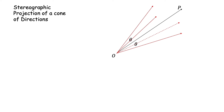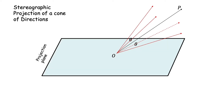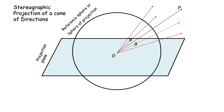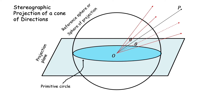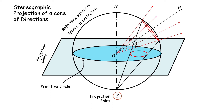Now let us project this cone of directions stereographically. We introduce the projection plane and the reference sphere centred at the origin O. This sphere cuts the projection plane in a circle known as the primitive circle, and we introduce an axis perpendicular to the projection plane which cuts the sphere at N and S, the north and south poles. The cone of directions, whose apex is at the center of the sphere, cuts the sphere in a circle — this is the spherical projection of the cone, not yet the stereographic projection.